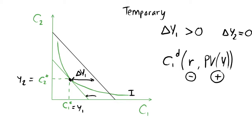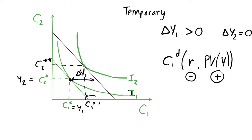We have some utility function and initial indifference curve, which we call I1. Now we're going to be able to move on to a higher indifference curve, I2, because our income has increased. So we now can consume at this new level: C2 star star and C1 star star.